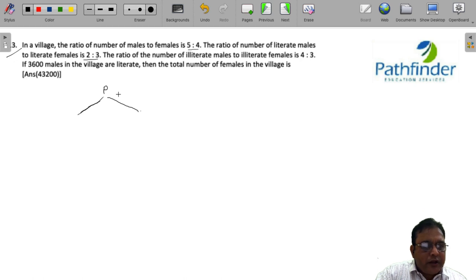Then you can bifurcate the males as literate males and illiterate males. You can bifurcate the females as literate females and illiterate females.